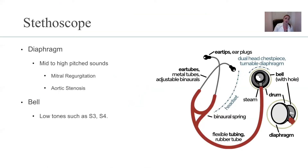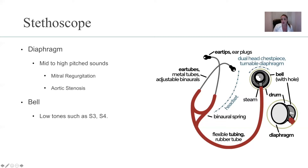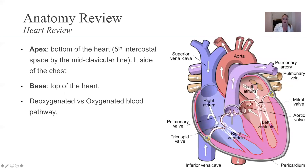The stethoscope — you have the diaphragm and you have the bell. The diaphragm is the larger part; the bell is the smaller one. With the diaphragm, you want to use it to hear mid to high pitch sounds, such as mitral regurgitation or aortic stenosis. The smaller part, or the bell, is best used for low tones, such as an S3 and an S4, which we're going to talk about more.